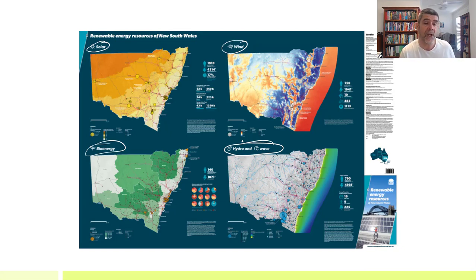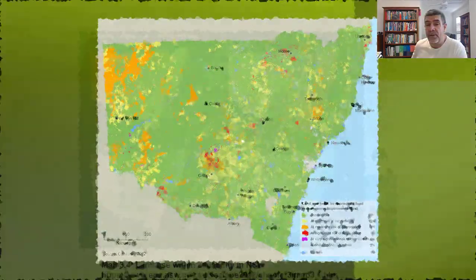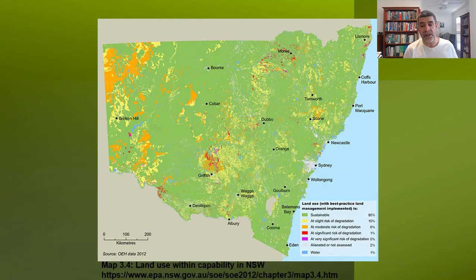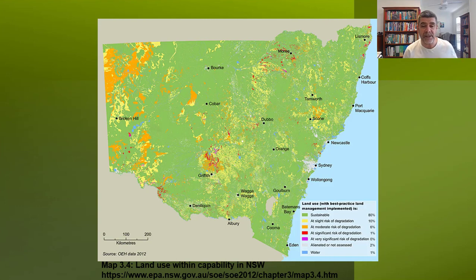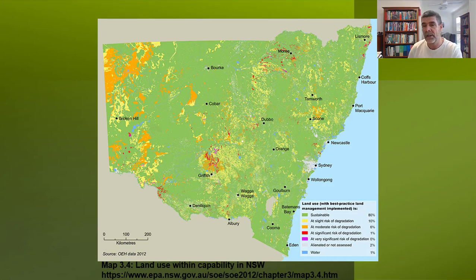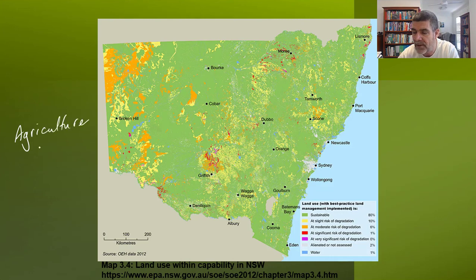These are very important resources, but they're not just for energy generation — some have other value beyond their ability to generate energy. We've looked at land use maps within New South Wales before, and you can see the ways these areas of land have been classified. We've got a level of sustainability, some areas at slight to moderate risk of degradation, and some areas that have been very significantly affected and would be almost impossible to return to their original state. Our focus at the moment is on agriculture, so we need to think about what actually happens to the land as a result of these agricultural practices.